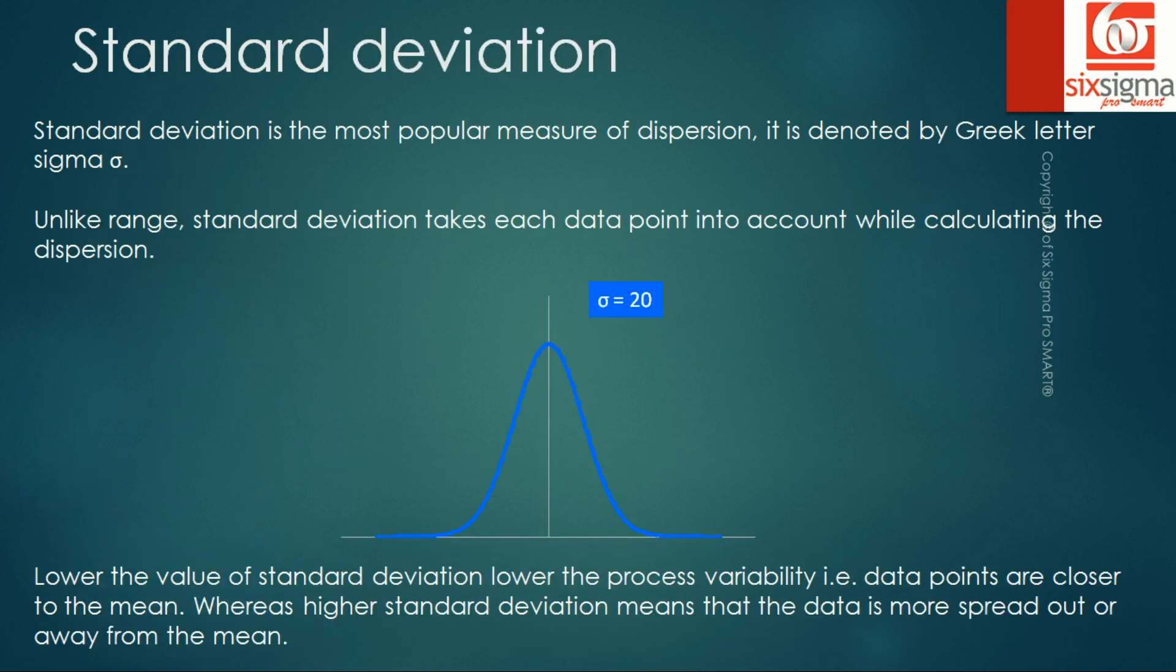Let's talk about standard deviation. Standard deviation is the most popular measure of dispersion. It is denoted by Greek letter sigma. Unlike range, standard deviation takes each data point into account while calculating the dispersion. Lower the value of standard deviation, lower the process variability, that is data points are closer to the mean. Whereas higher standard deviation means that the data is more spread out or away from the mean.